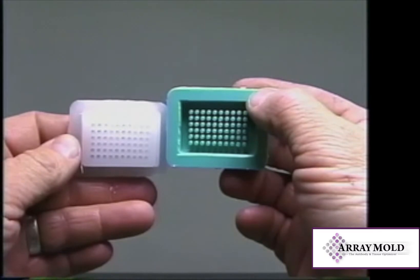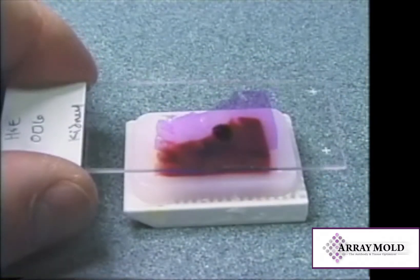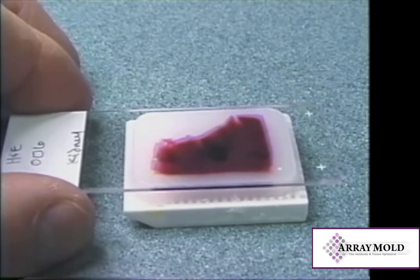The specimen layout is the same as any other array instrument on the market. An H&E slide is marked to show the proper punching site in the paraffin donor block.